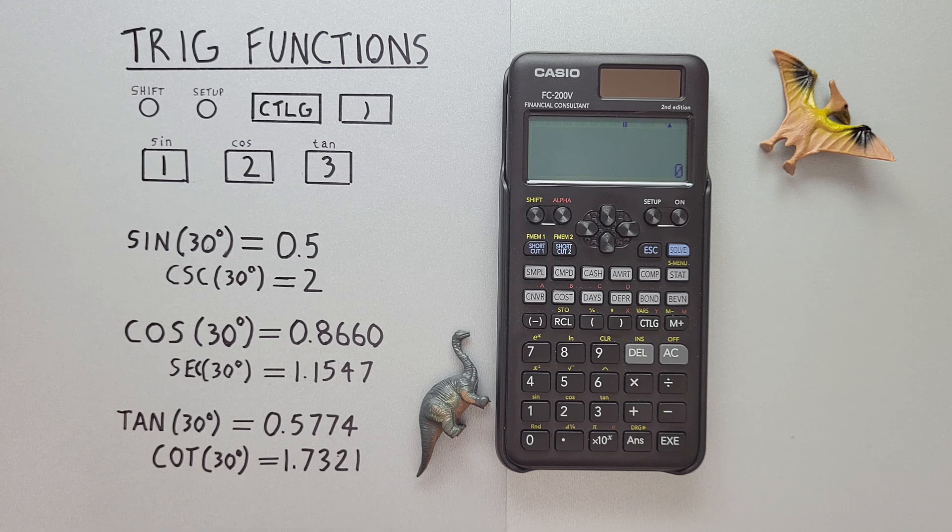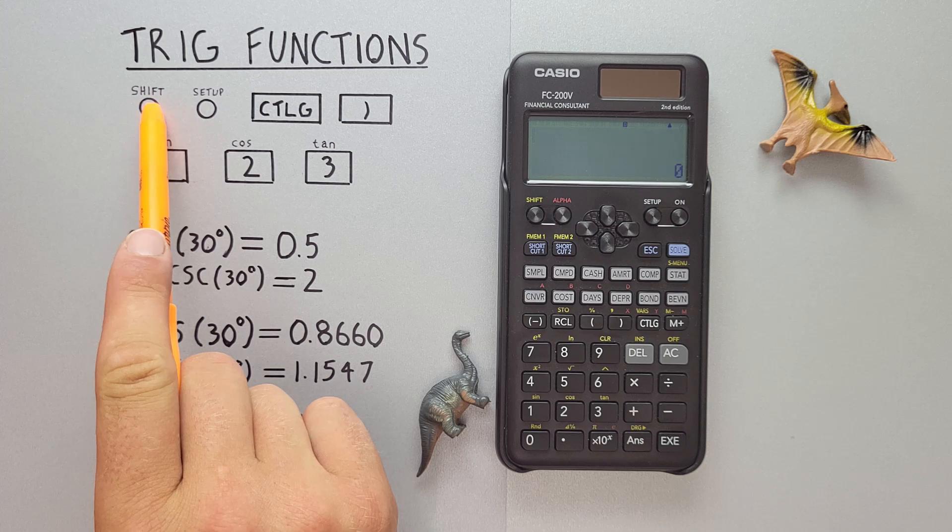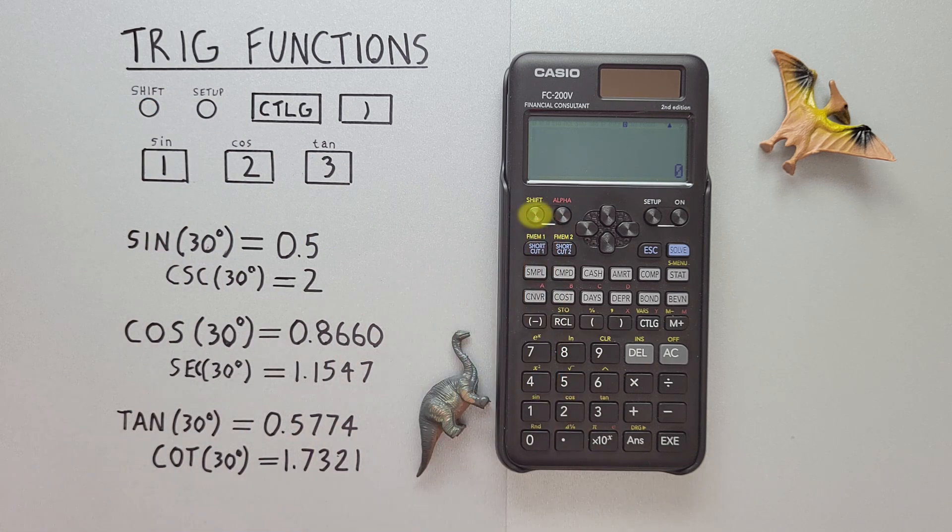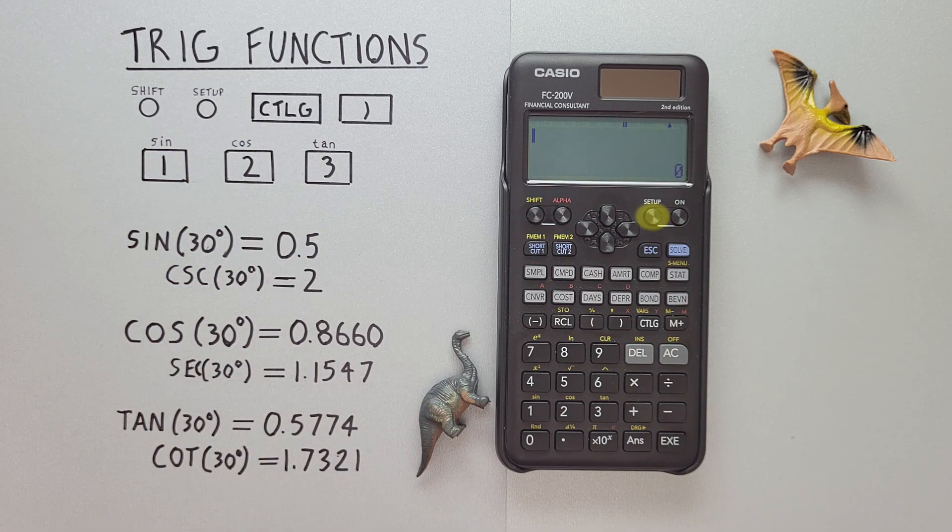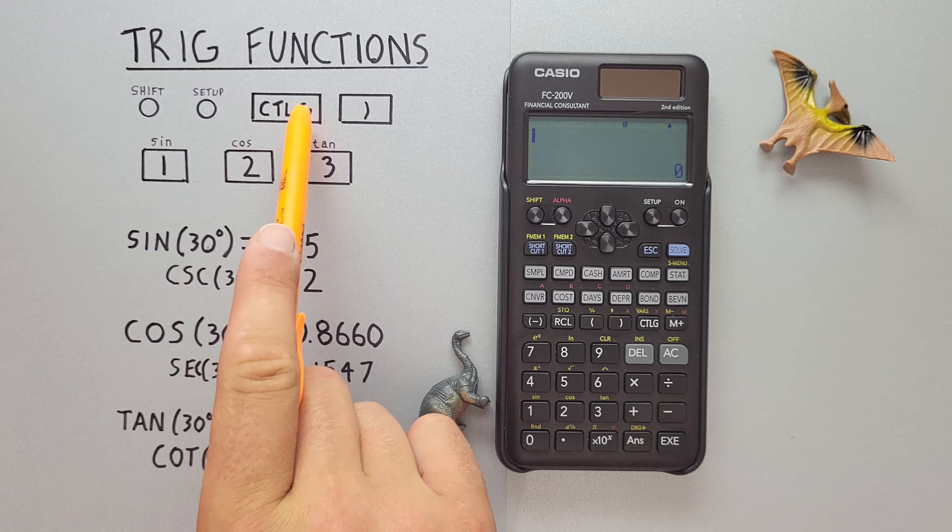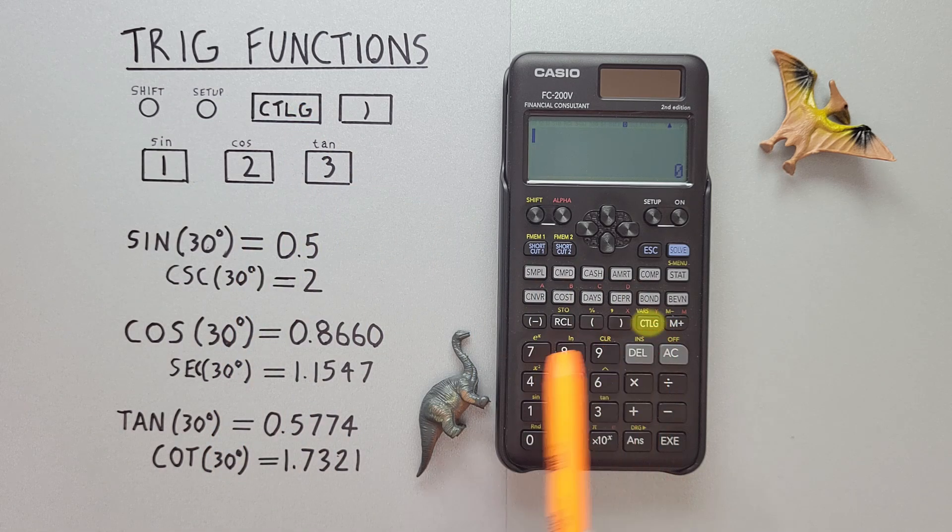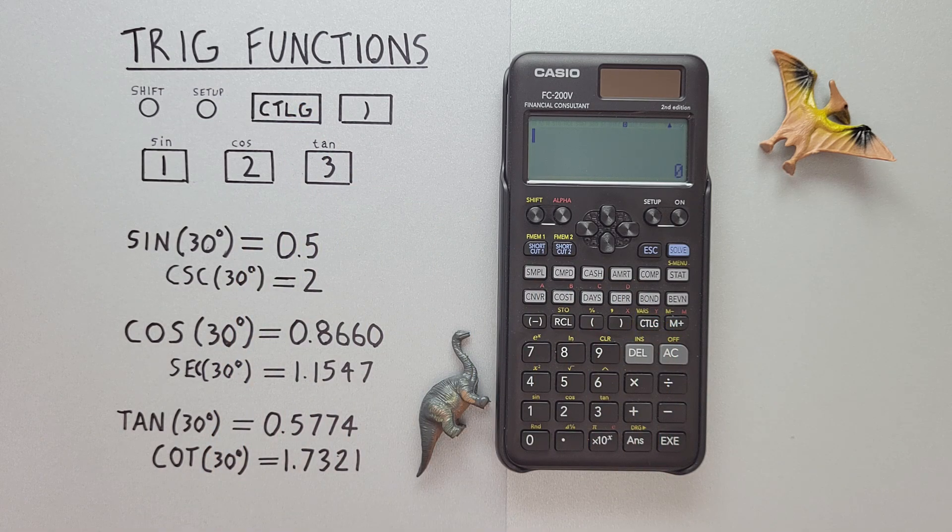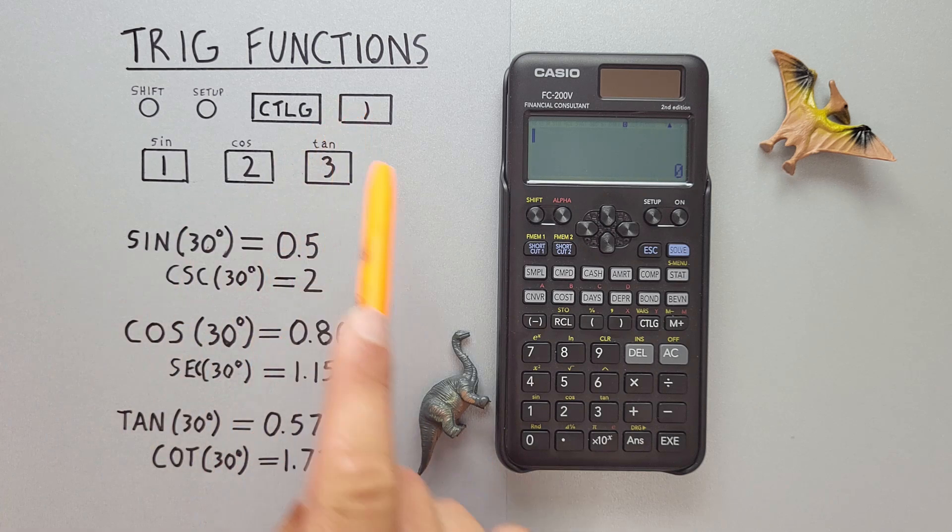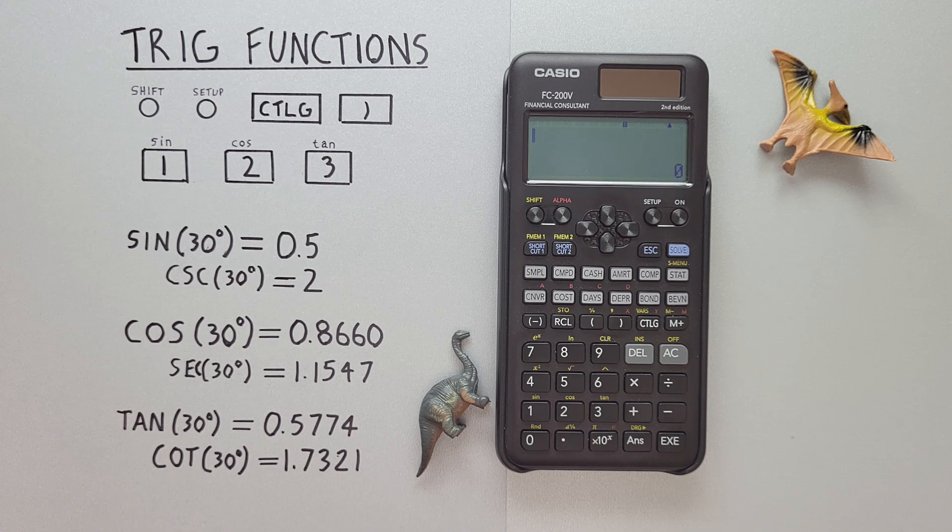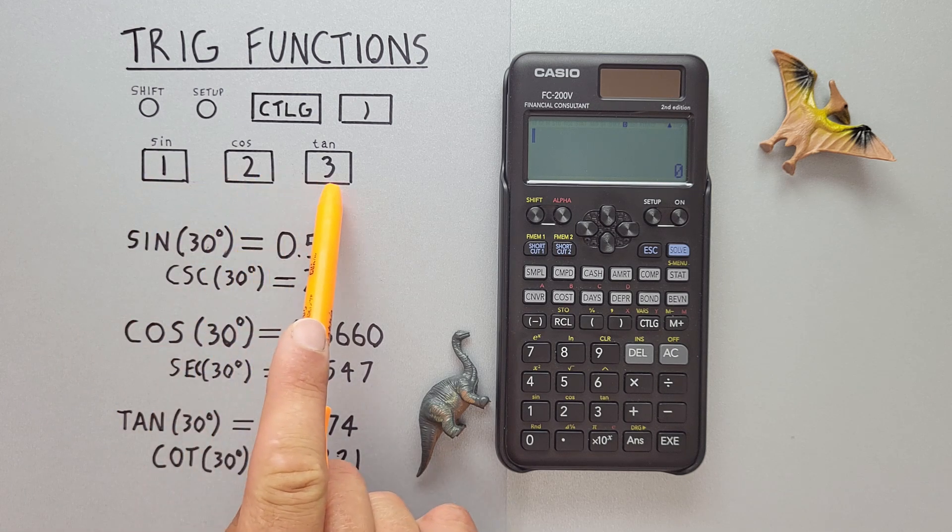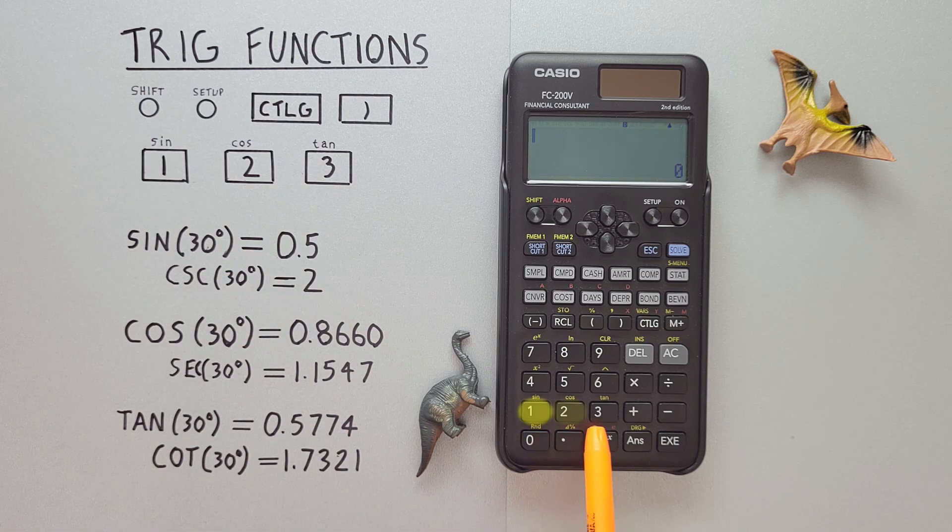To do this, we'll use the shift key that looks like this located here. The setup key that looks like this located here. The catalog key that looks like this located here. The right bracket key that looks like this located here. And the one two and three keys with the shift function of sine, cos, and tan that looks like this located across the bottom down here.